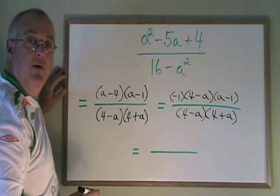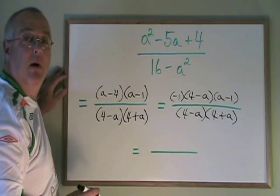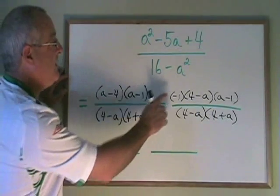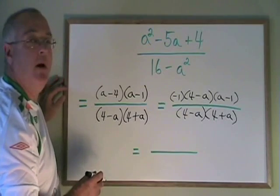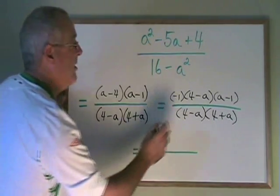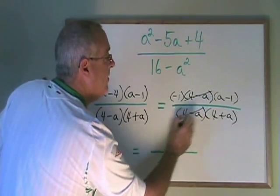Again, if you don't know the minus 1 trick, I have another video which illustrates how to do this in detail. Now that we have done this trick, we have 4 minus a on both the top and the bottom. We can cancel the 4 minus a.